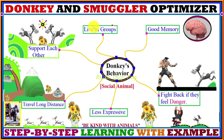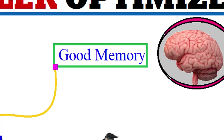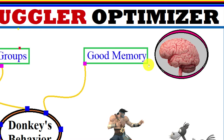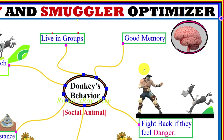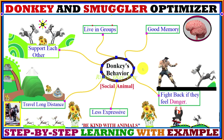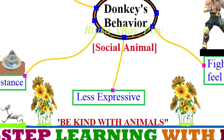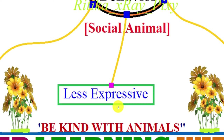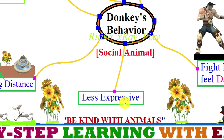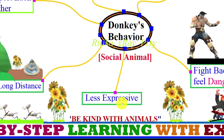The donkey is a social animal and they live in groups. They have very good memory — they love to learn, and every time you interact with a donkey they will learn something from you. Donkeys are less expressive in comparison with horses; it is very hard to understand a donkey's expressions, and they often use sound and accents to express their emotions.